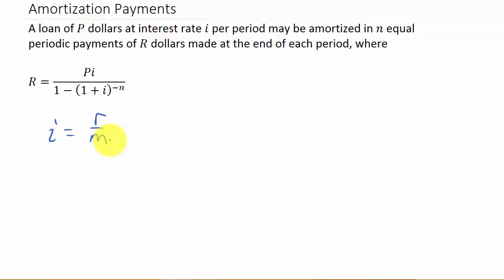If it's compounded annually, m would be 1. Semiannually, m would be 2. Quarterly, m would be 4. Monthly, m would be 12. And daily, m would be 365.